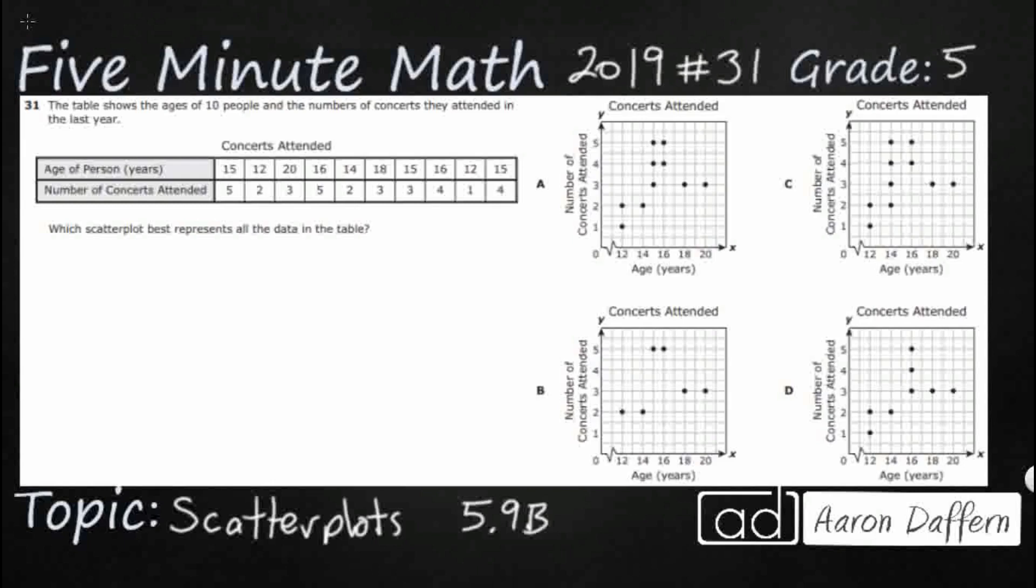So we have a table here that shows the ages of 10 people and the number of concerts they attended in the last year. And so we need to find a scatter plot that best represents all the data in the table.